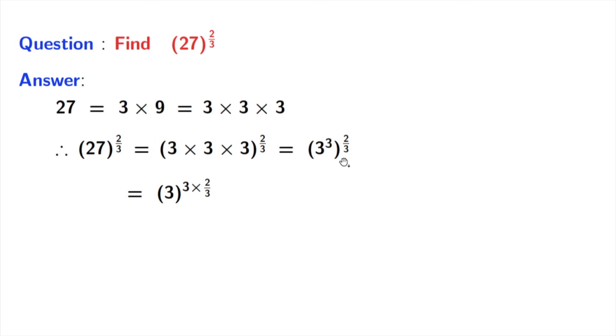Now, we can easily write it as 3 power 3 times 2 by 3, using the rule of a power m power n is equal to a power m times n.